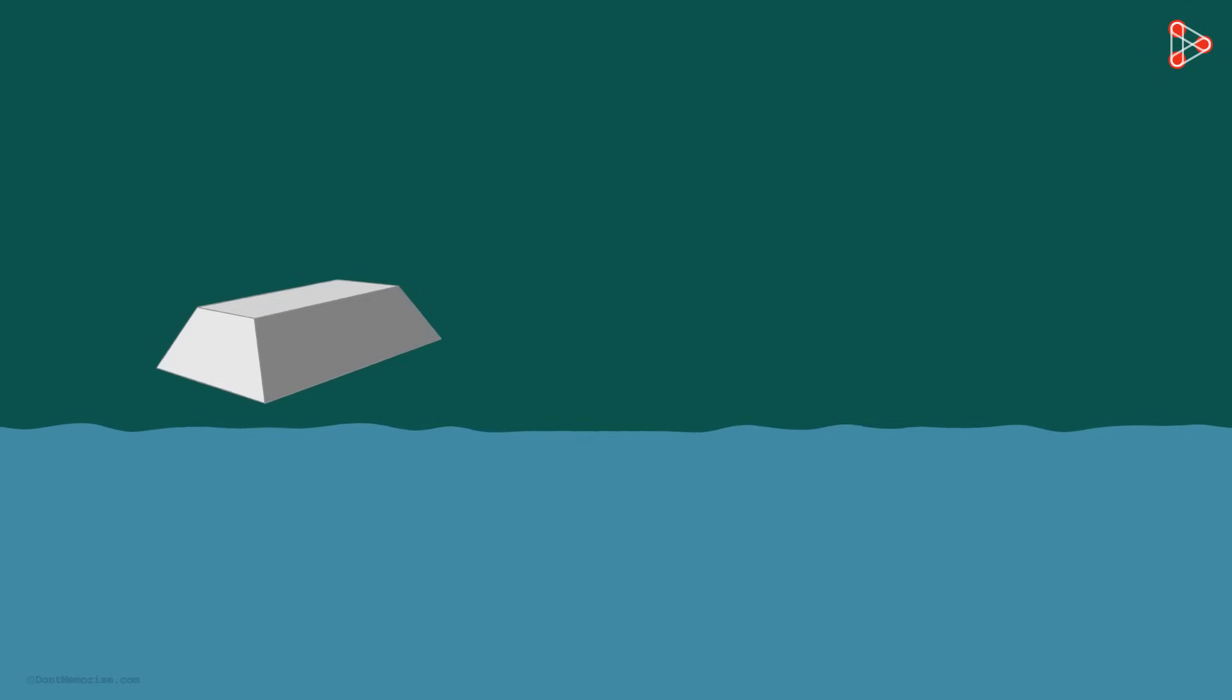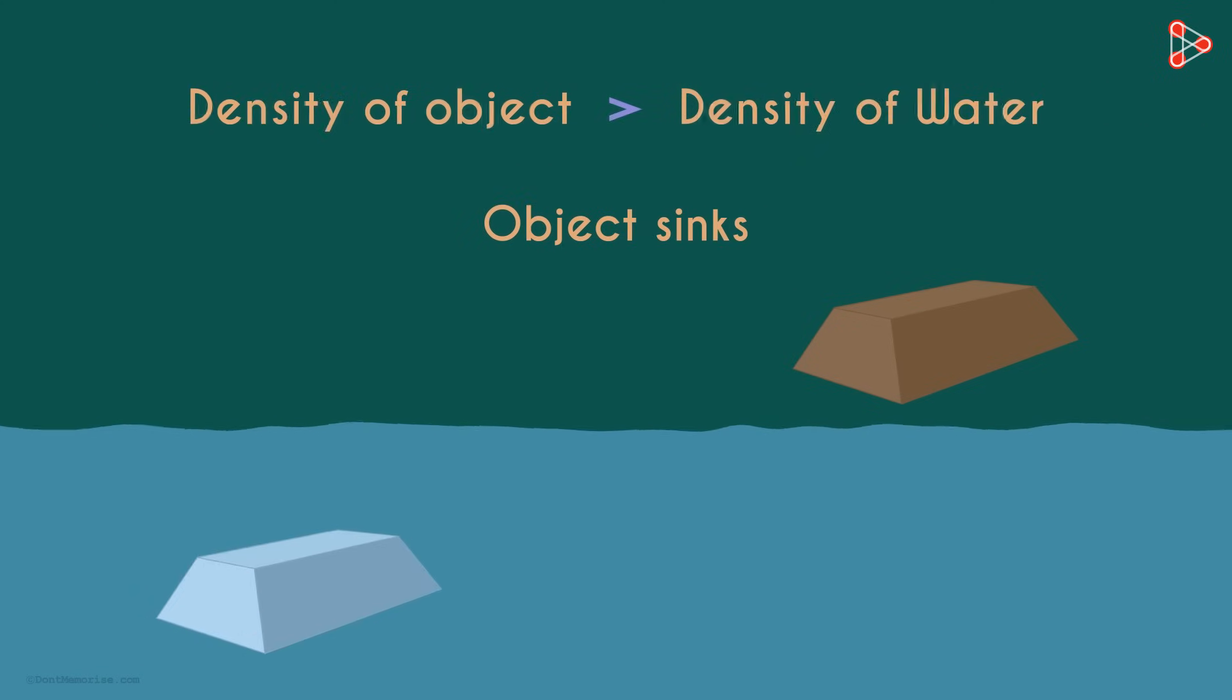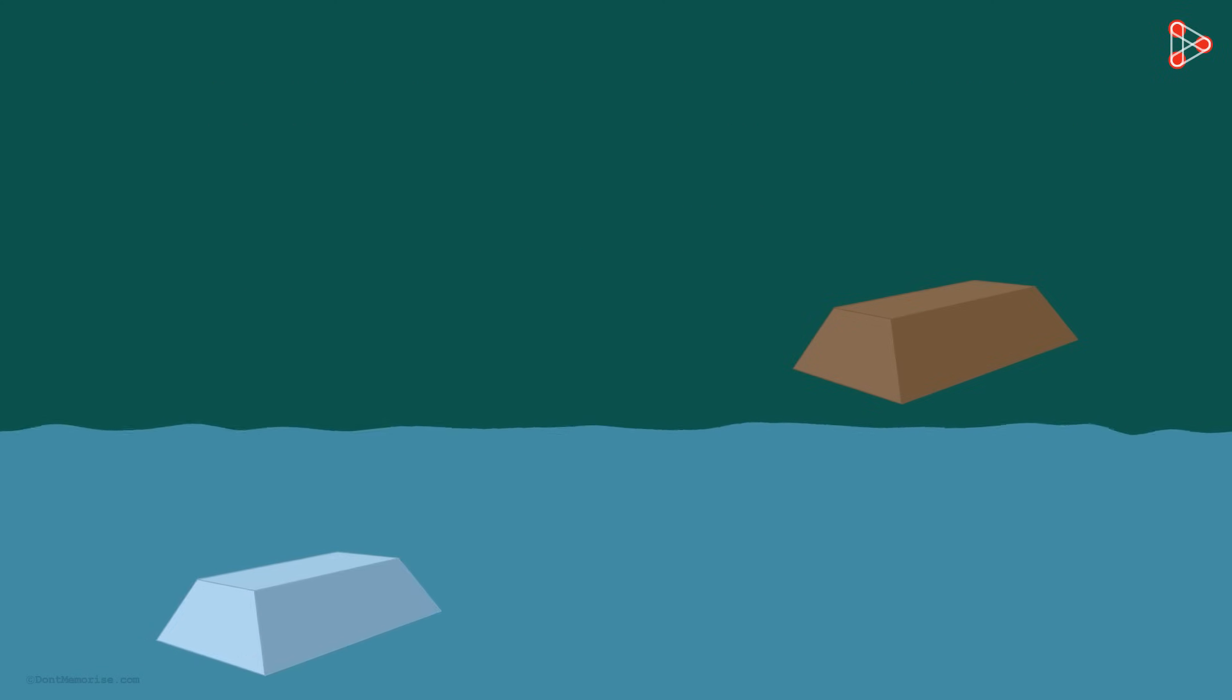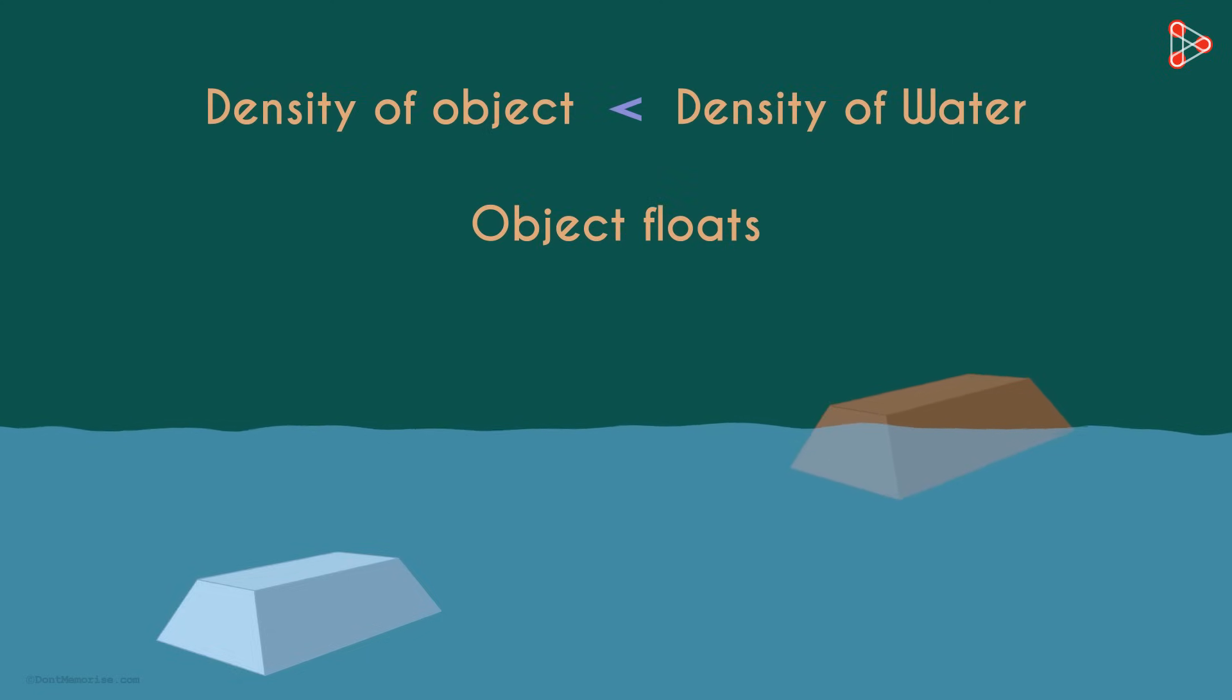It tells us whether the object will float or sink in water. In simple terms, a substance will sink if it's denser than the liquid it's placed in. And it will float if it's less dense than the liquid it's placed in. How can we say this mathematically?